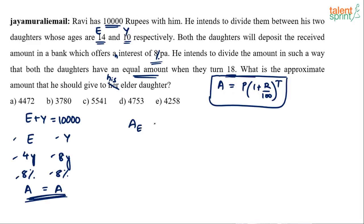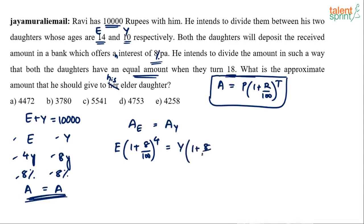The amount earned by the elder daughter equals the amount earned by the younger daughter. So: E into (1 + 8/100) to the power 4 equals Y into (1 + 8/100) to the power 8. That is, principal times (1 + R/100) to the power time period, for both sides — and both of these are equal.